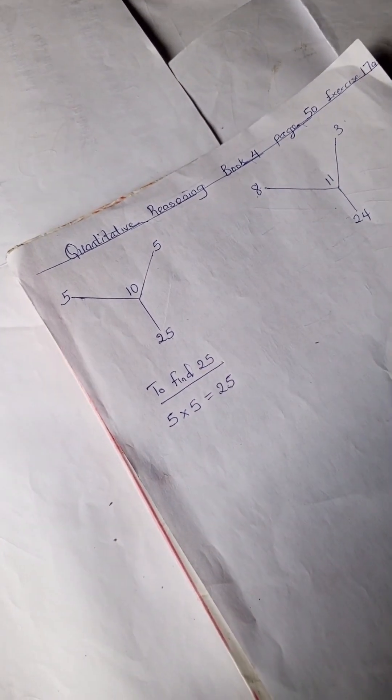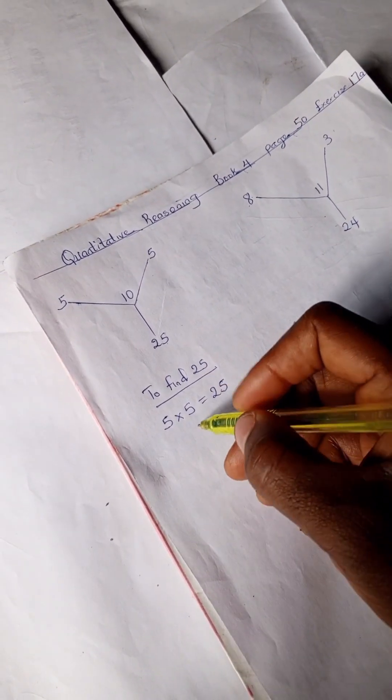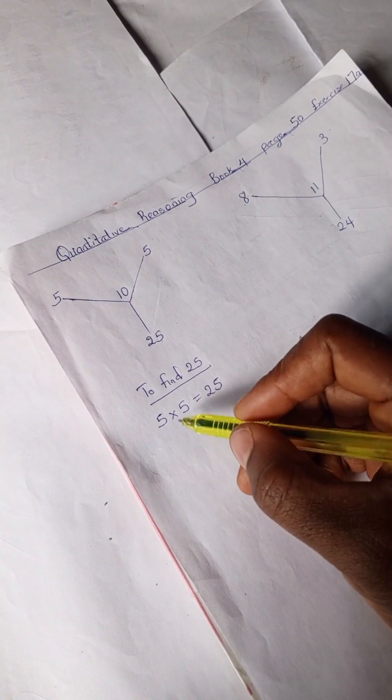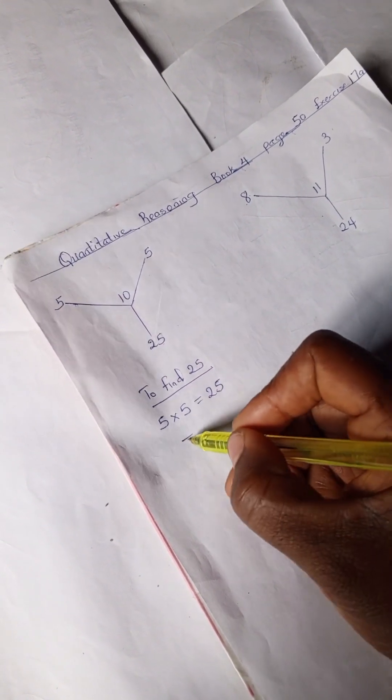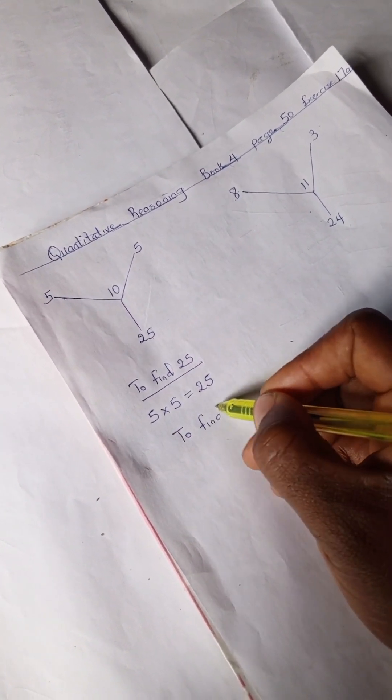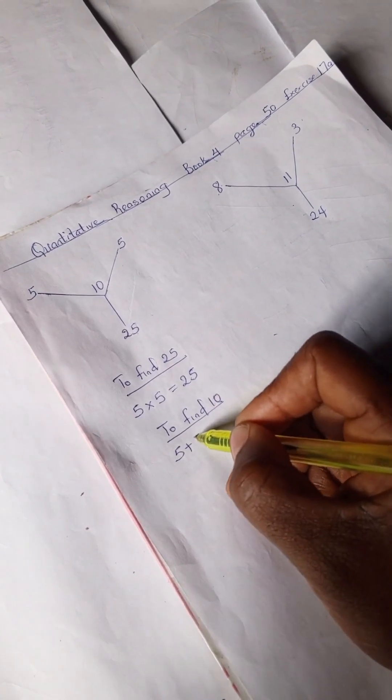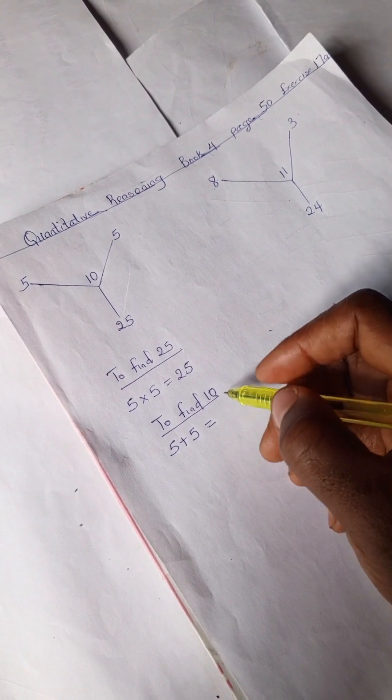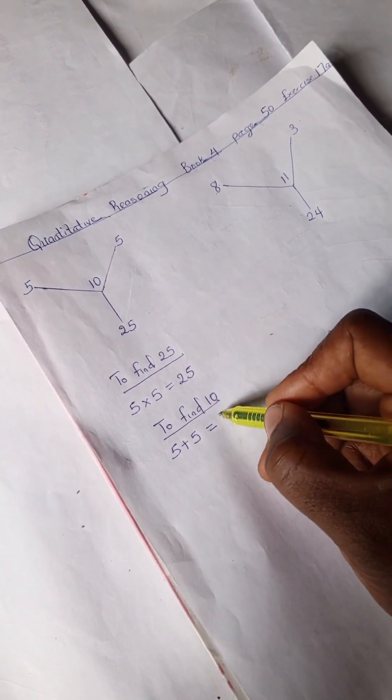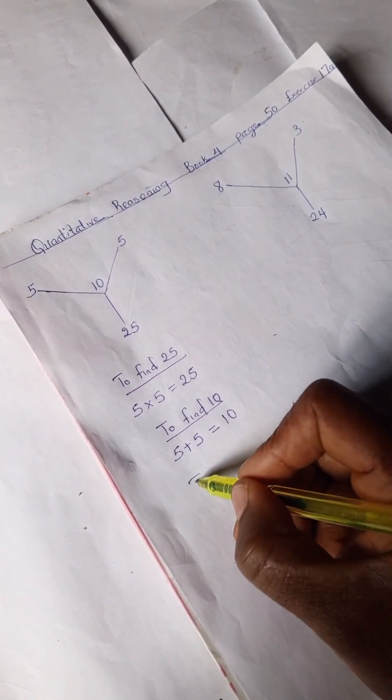Remember to like and share this video with others. So we have our next number. We have to find 10. We have 5 plus 5. Looking at this, you realize that we're using our basic mathematical operations.